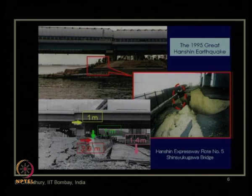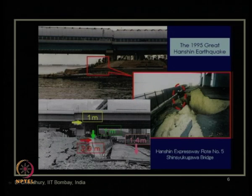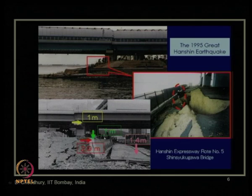We have also discussed geotechnical damages due to liquefaction and lateral spreading that ultimately damaged superstructures after the 1995 Kobe earthquake. This is the bridge abutment — after the soil got liquefied and lateral spreading occurred, the movement of this portion was horizontally about 2.9 meters and vertically about 1 meter.